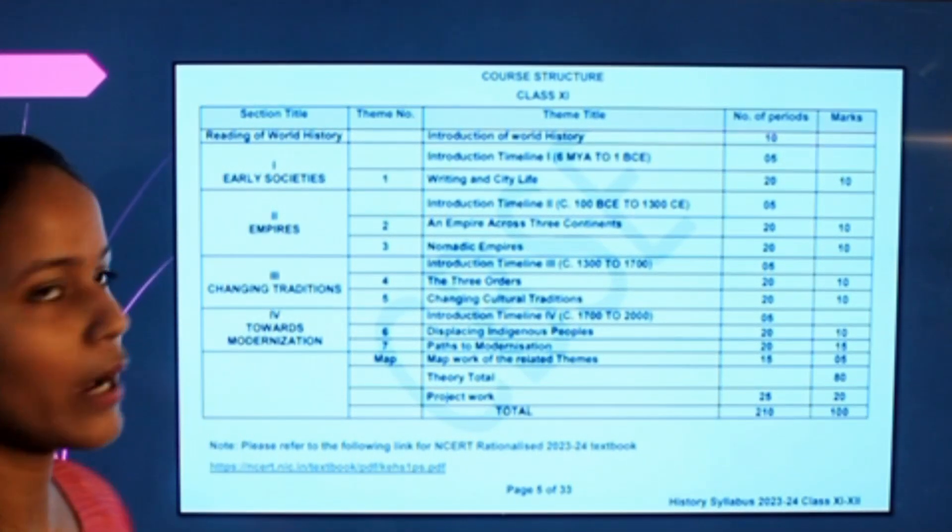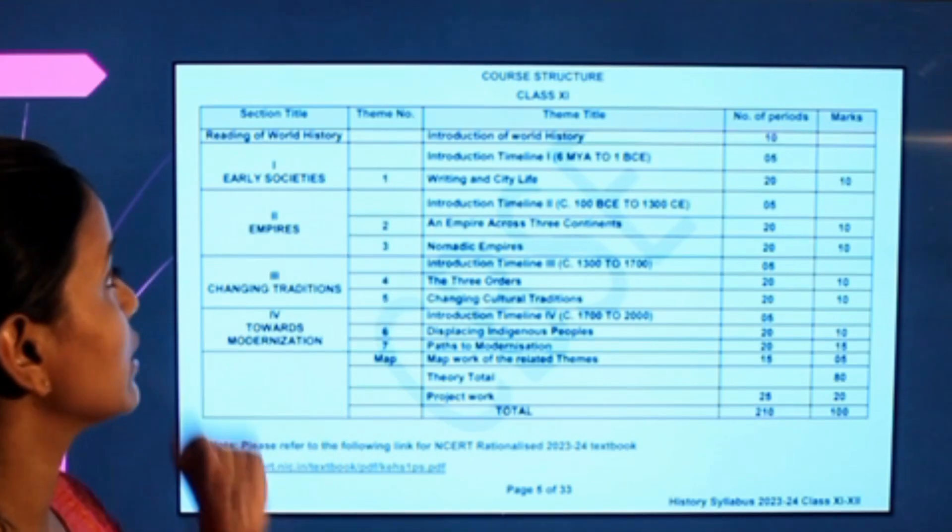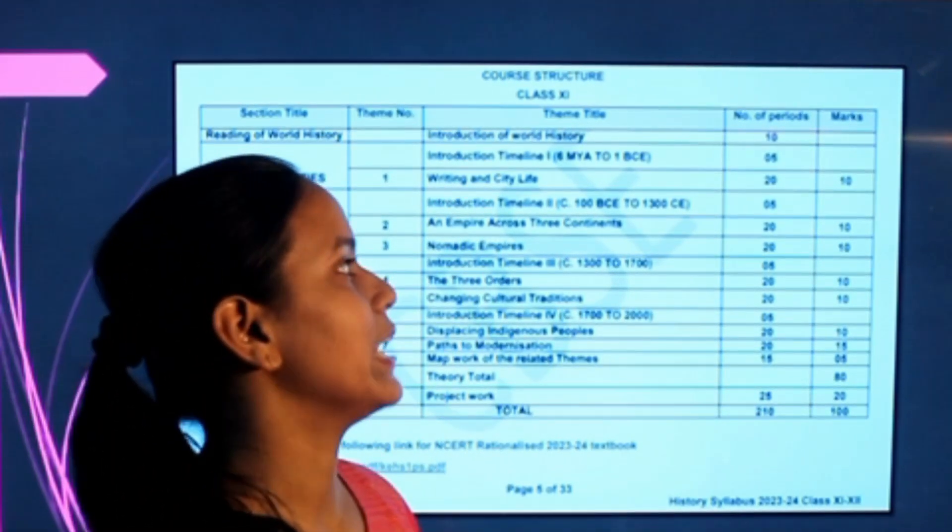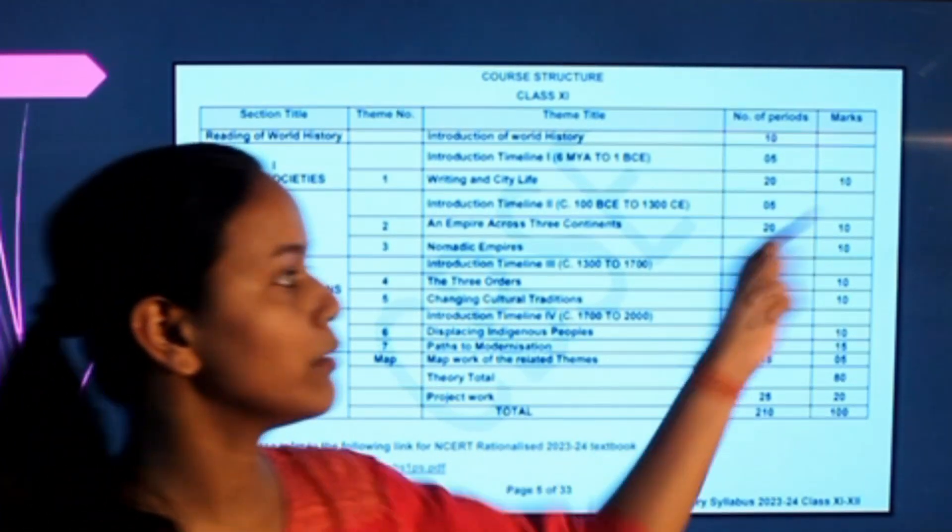You guys will see that the Early Societies will be given in your book. There is Theme 1, Writing and City Life. That chapter is coming for 10 marks.